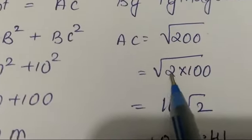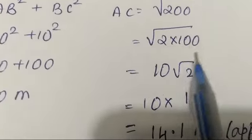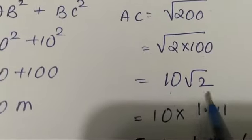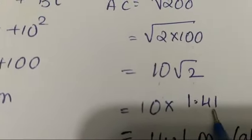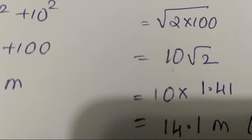Now you have to find the square root. Children, calculations are very important in physics. Pay attention carefully. How to find root of 200? Very simple. We'll write this as 2 into 100. 100 is a perfect square, so its square root is 10. And keep root 2 as root 2. Now remember, the value of root 2 is 1.41, so this will be 10 into 1.41.